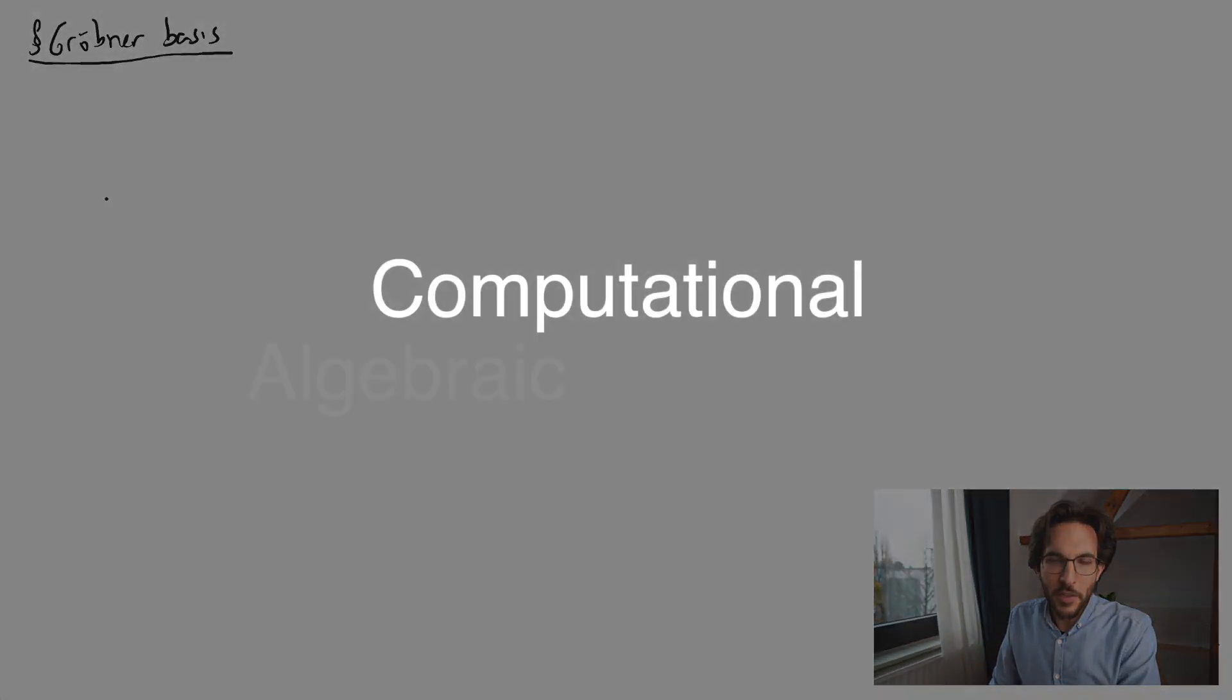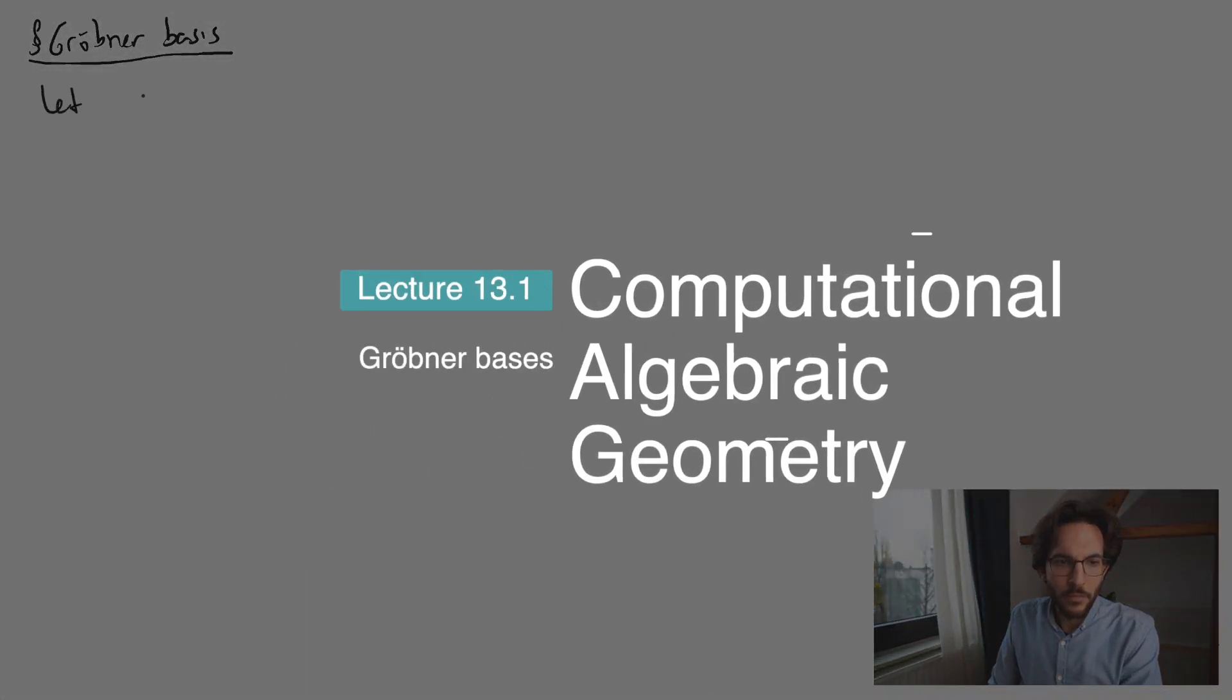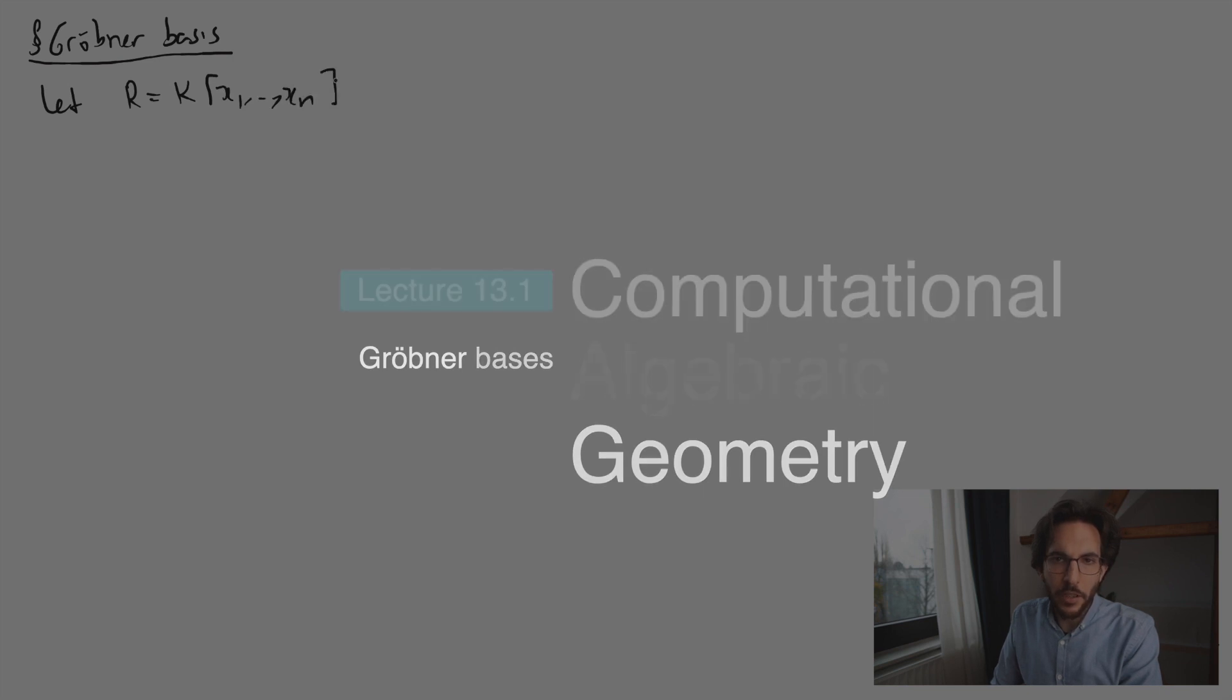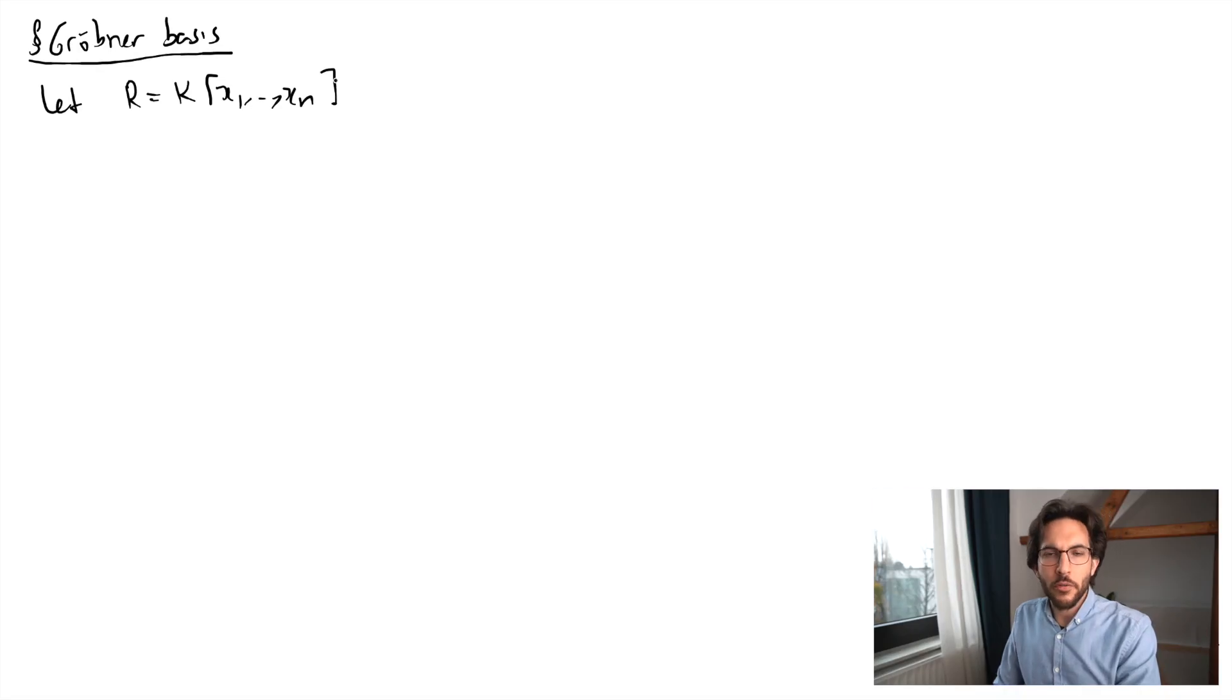Hello everyone and welcome to another session of Computational Algebraic Geometry. Today we're going to define what a Gröbner basis is and this will allow us to perfect our division algorithm. Let's get started. First, let's fix our polynomial ring. With k a field, I'm taking a polynomial ring over k with n variables and what's important here is that I need to fix a monomial ordering.